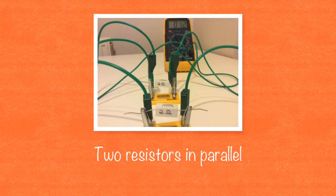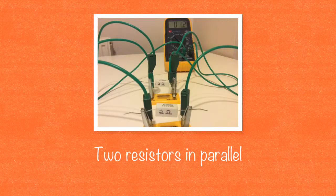We can see from the value of the multimeter that the resistance goes down when two resistors are placed in parallel with each other.